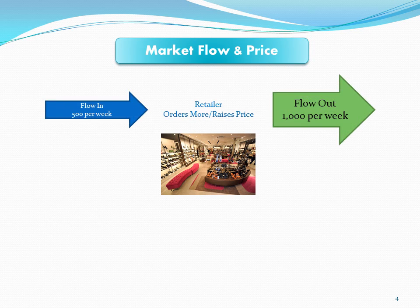In this first situation, I'm depicting that there are 500 pairs flowing in but a thousand pairs flowing out. Obviously you would like this as the store owner because it's a chance to make more money. But your inventories are dwindling and you have to bring this back into balance — you don't want an empty store.